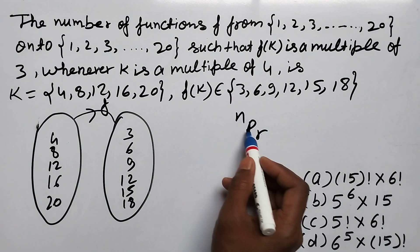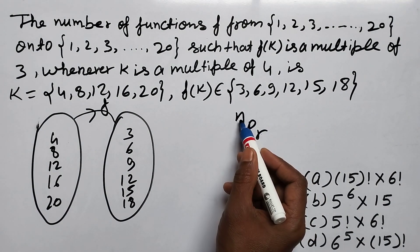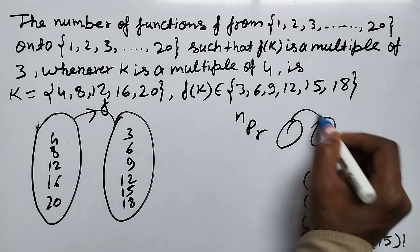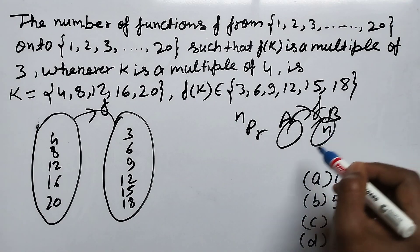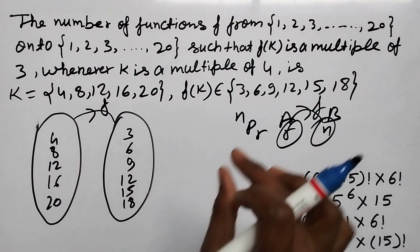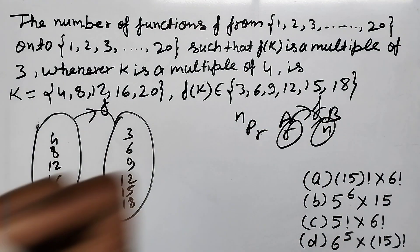This formula applies: nPr, permutation r, where mapping is happening from set A to set B. Set A has r elements and set B has n elements. How does this formula work? Let me clarify that too.